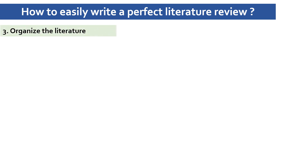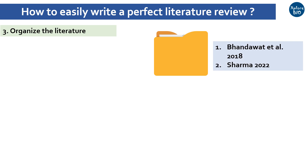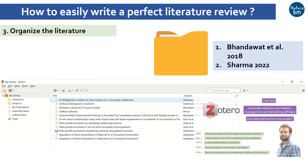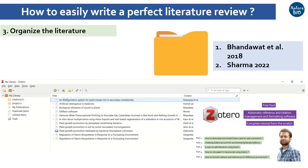The next step is organizing the literature you read or download. Make a separate folder for papers on each particular aspect of your research and rename the files so you can easily remember them. A useful approach is to assign a number followed by the author name and year of publication to each paper. You can also build a literature library using reference management software like Zotero — a free and easy-to-use software where you can create a library of research papers and automatically format references, saving a huge amount of time.